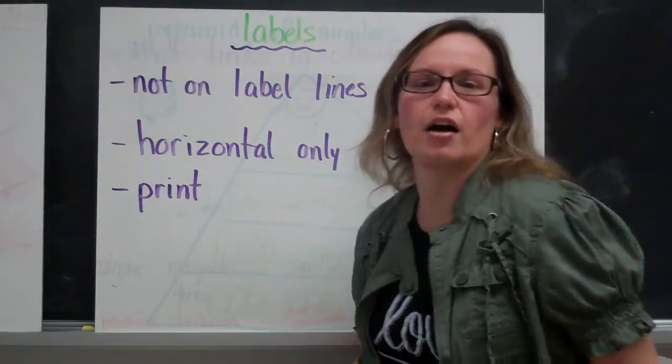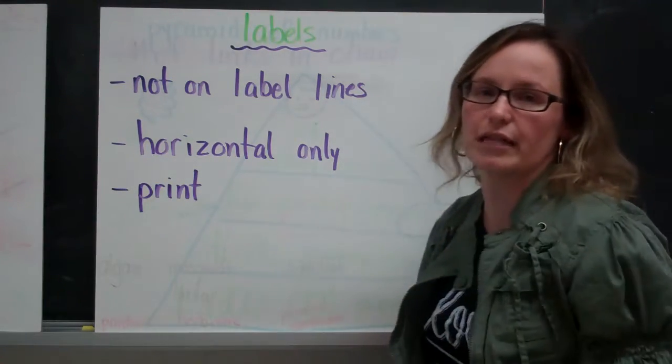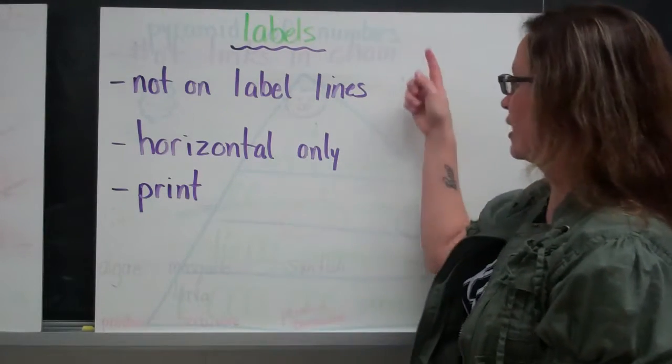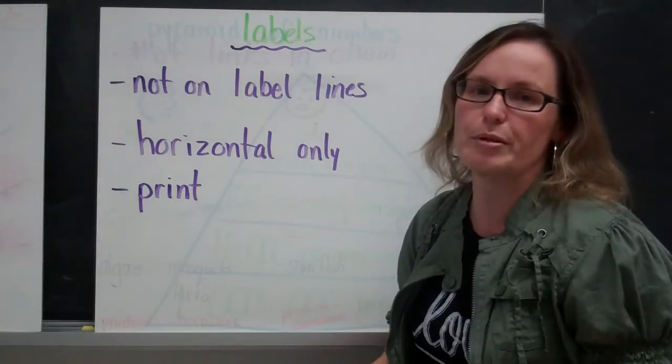The labels themselves. The labels should be, again, on the right hand side. And they should start at the end of the label line. They should never be written on the label line. They should be written horizontally only. There shouldn't be any on an angle. And again, they should all be printed.